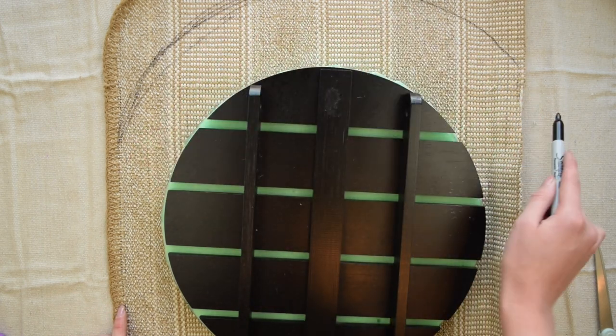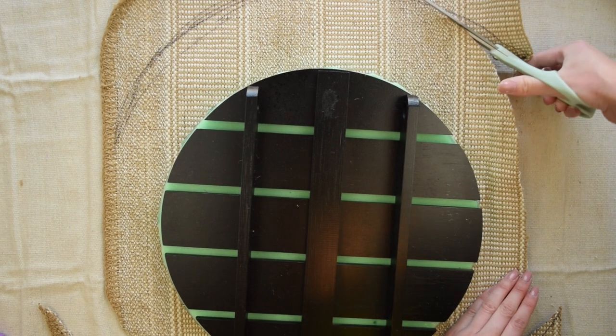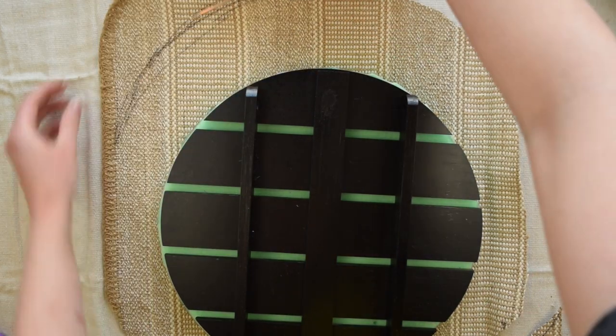First, I cut the rug down to the right size and also rounded it out so that it would fold nice and neat around this round tabletop.